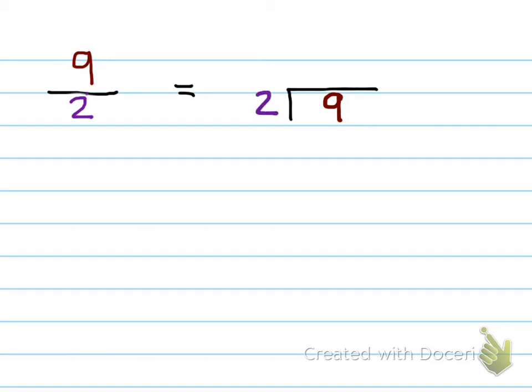Now, when you divide 9 divided by 2, that would be 4. 4 times 2 is 8. Let me put our remainder in a different color here. 1, right? So the answer would be 4 remainder 1.